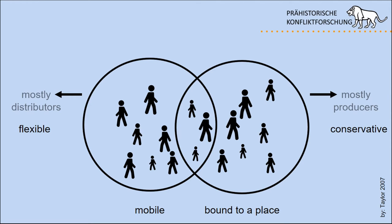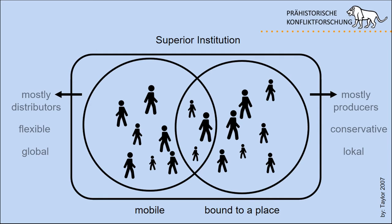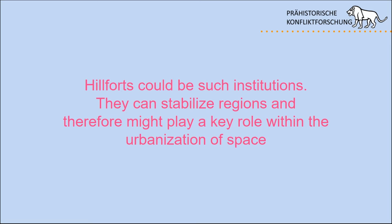In classical mobility theory by Taylor, these groups are given attributes like flexible and conservative — I'd be careful with those, but the mobile people do think more globally and try to stay connected to networks, while bound-to-place people act more locally, interested in safe borders, safe space, and a good hinterland. These are drifting forces — society drifts in two directions and needs a superior institution to regulate conflicts. I would argue that hillforts are expressions of these superior institutions, and I will try to show through the model that hillforts stabilize regions, playing a key role in urbanization by allowing flows of goods to traverse more safely through the space they safeguard.